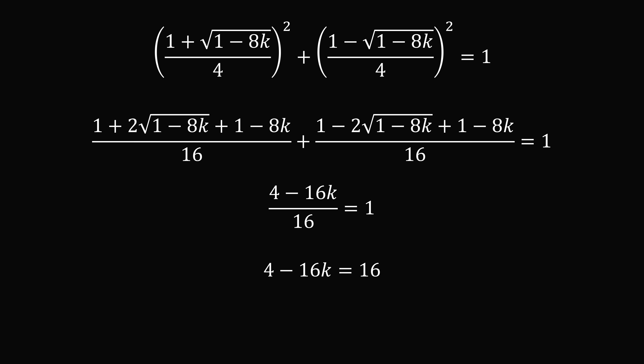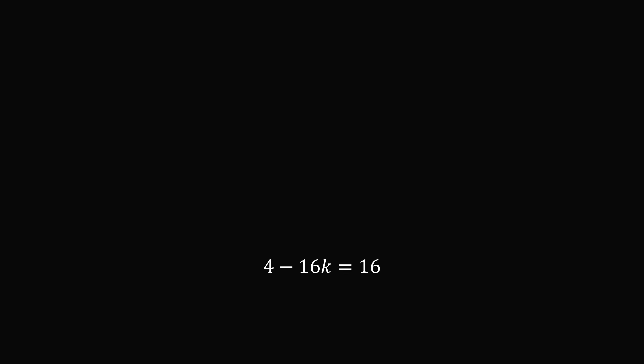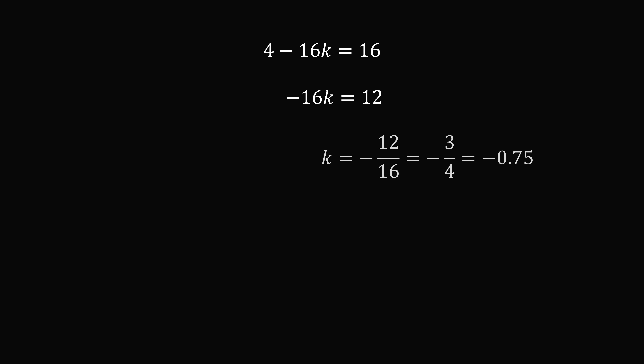Multiplying both sides by 16 gives 4 minus 16k equals 16. Subtracting 4 from both sides gives negative 16k equals 12, which means k equals negative 12 over 16, which simplifies to negative 3 over 4, or negative 0.75. And that's one way to get the answer.